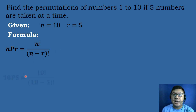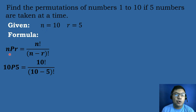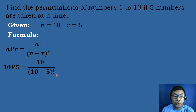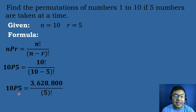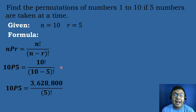We will substitute the corresponding values. The value of N is equal to 10 and the value of R is equal to 5, giving us 10P5 equals 10 factorial over the quantity 10 minus 5 factorial. Bringing down, 10P5 equals 10 factorial — that is 10 times 9 times 8 times 7 times 6 times 5 times 4 times 3 times 2 times 1. If you press it on your calculator, 10 factorial equals 3,628,800.